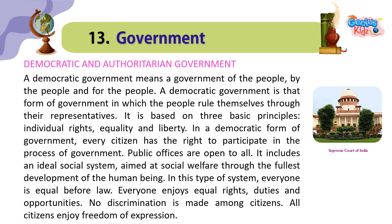Democratic and Authoritarian Government. A democratic government means a government of the people, by the people, and for the people. It is that form of government in which the people rule themselves through their representatives. It is based on three basic principles: individual rights, equality, and liberty. In a democratic form of government, every citizen has the right to participate in the process of government. Public offices are open to all. It includes an ideal social system aimed at social welfare through the fullest development of the human being. In this type of system, everyone is equal before law. Everyone enjoys equal rights, duties, and opportunities. No discrimination is made among citizens. All citizens enjoy freedom of expression.